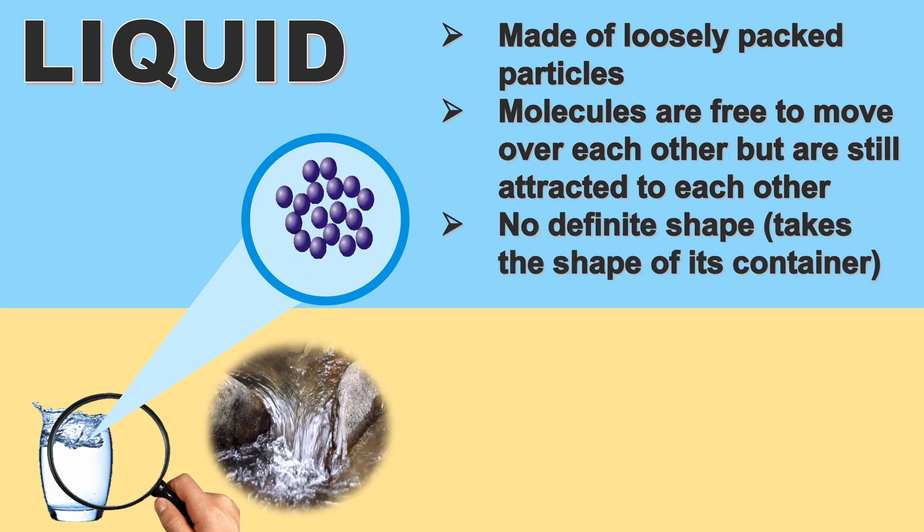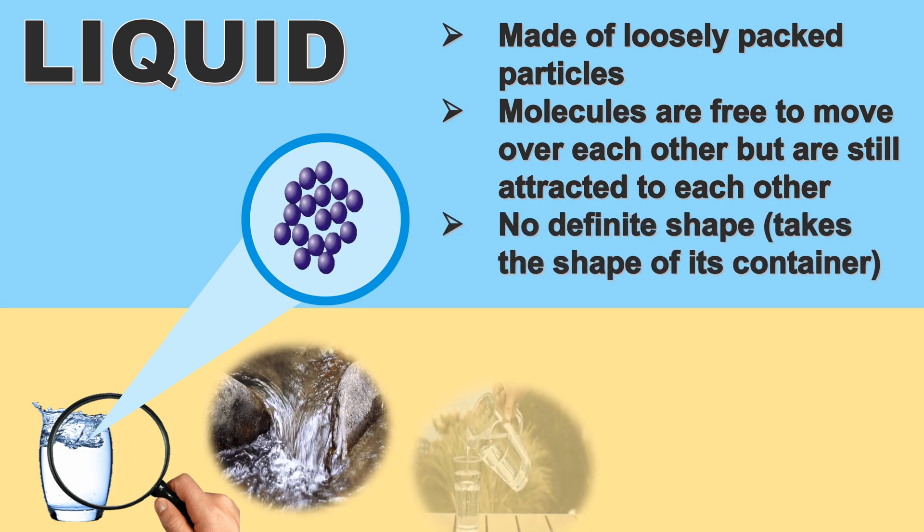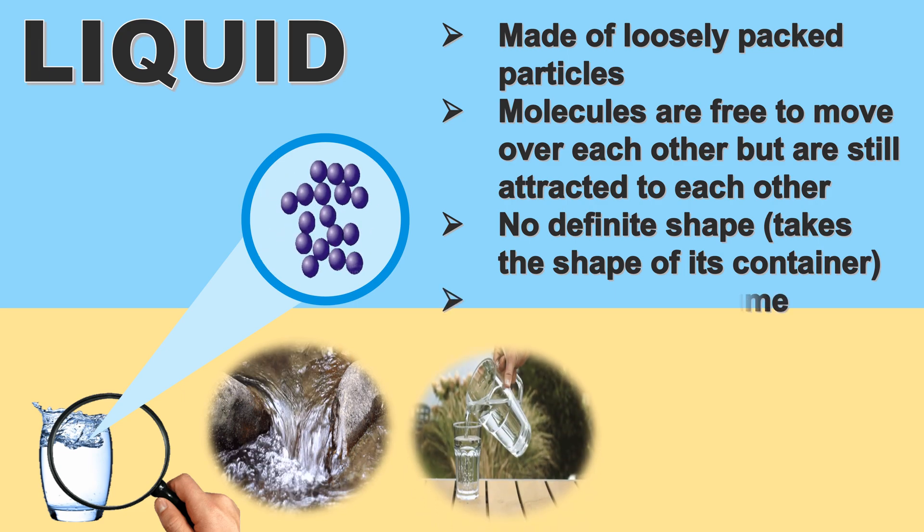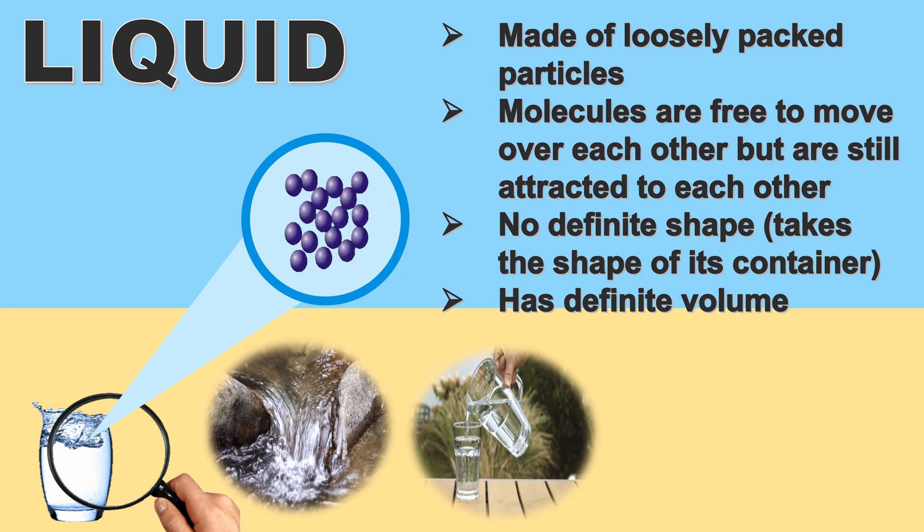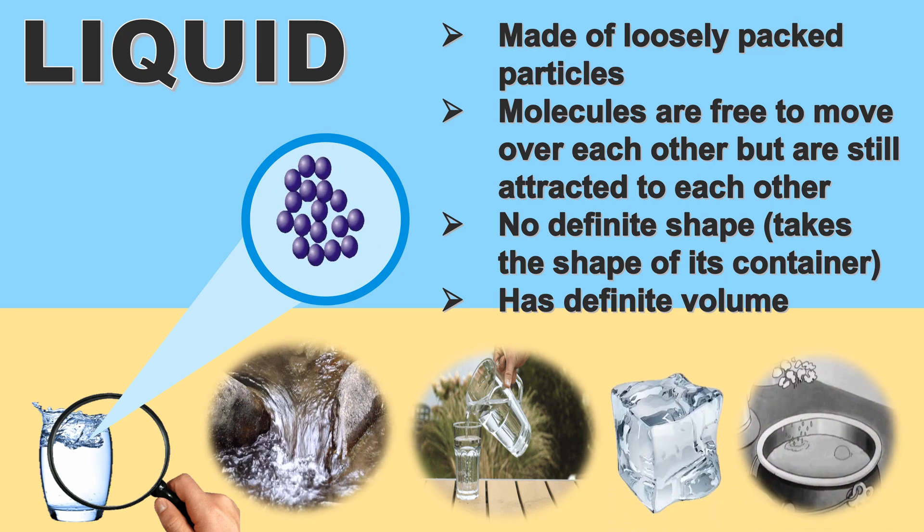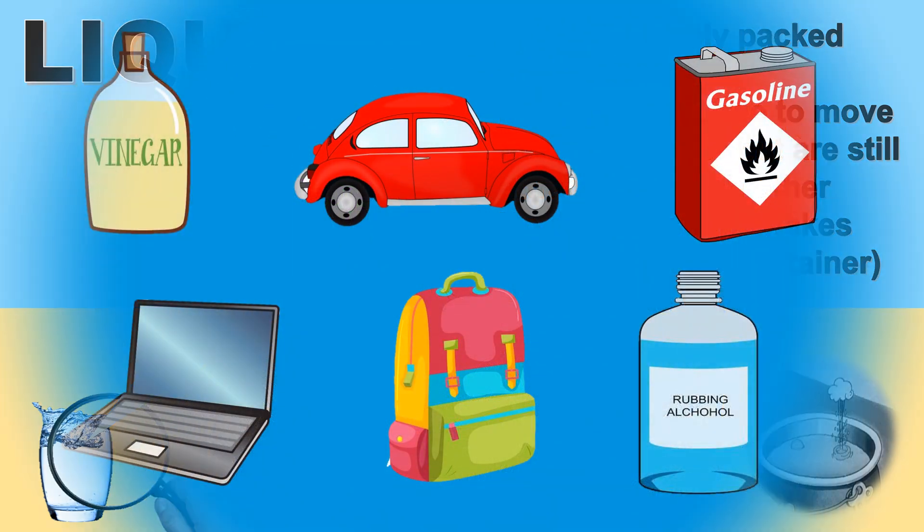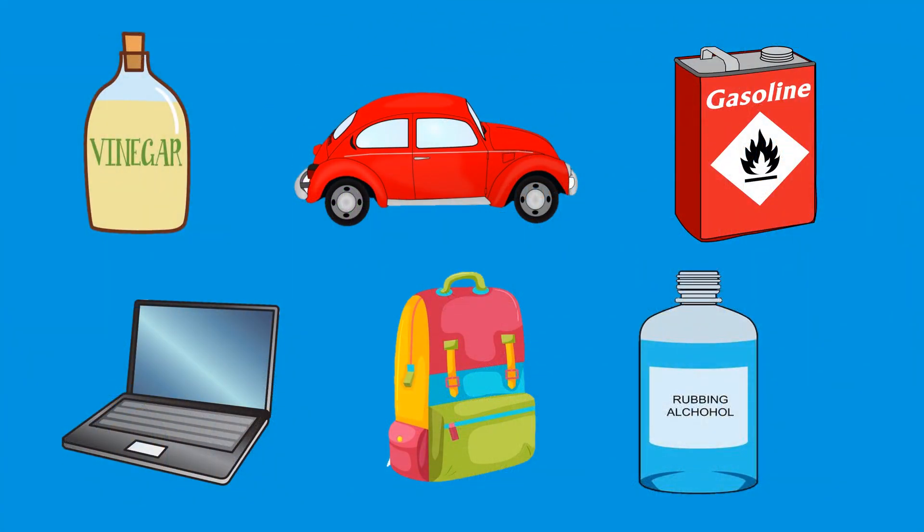Liquid has no definite shape and takes the shape of each container, but it has a definite volume. Liquid can change into solid and gas. Here are some objects. Can you identify which of these are liquid?